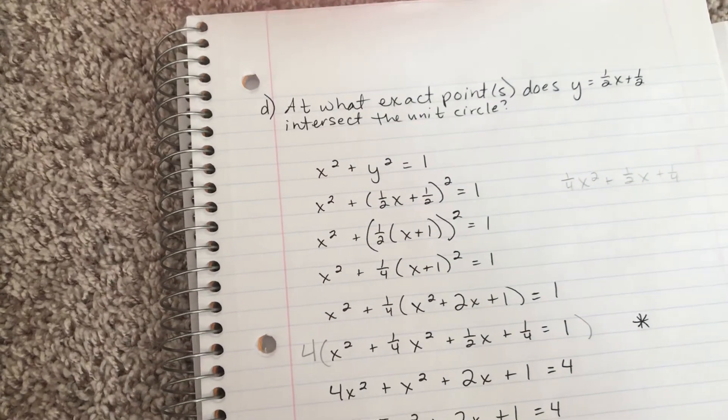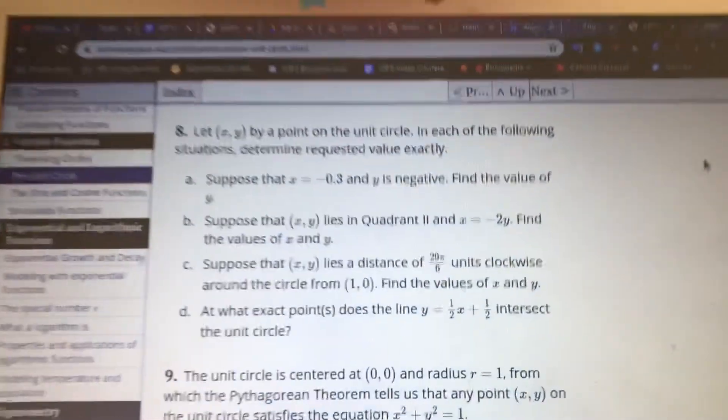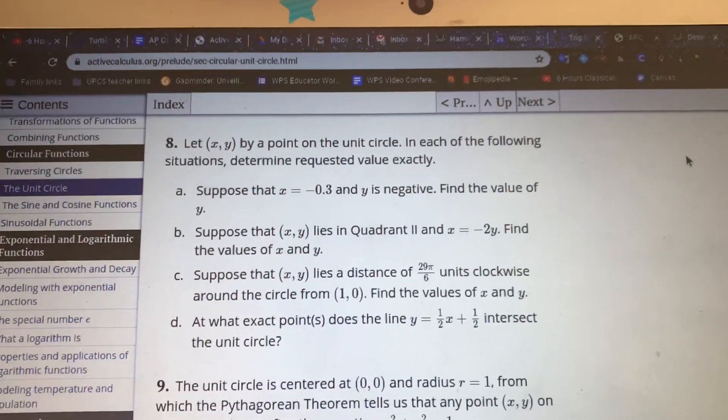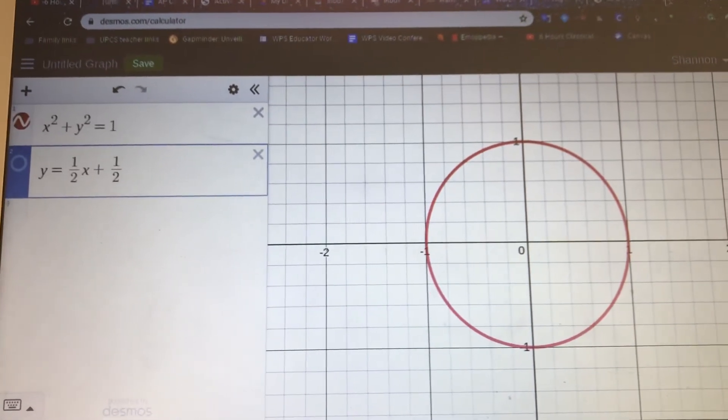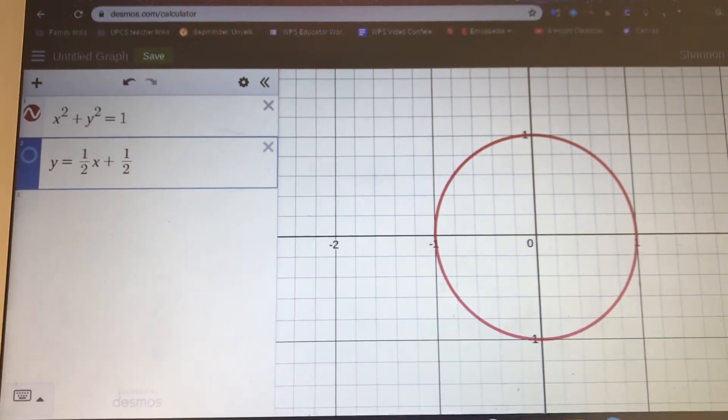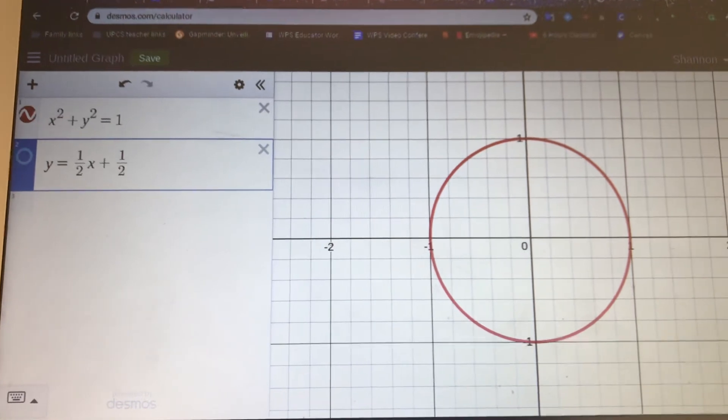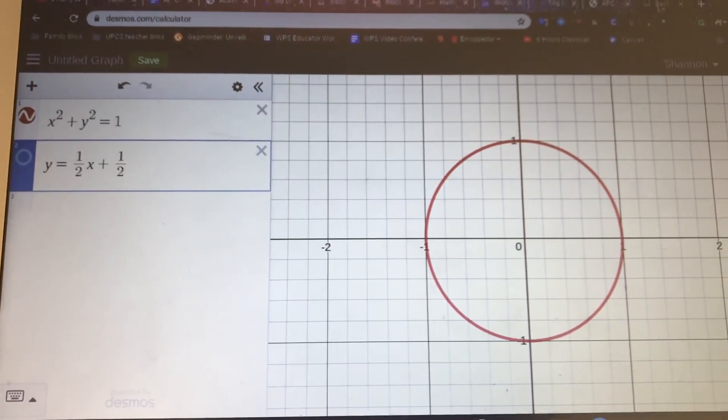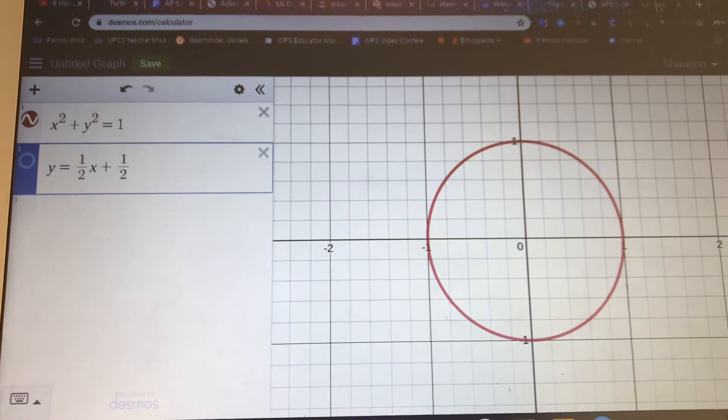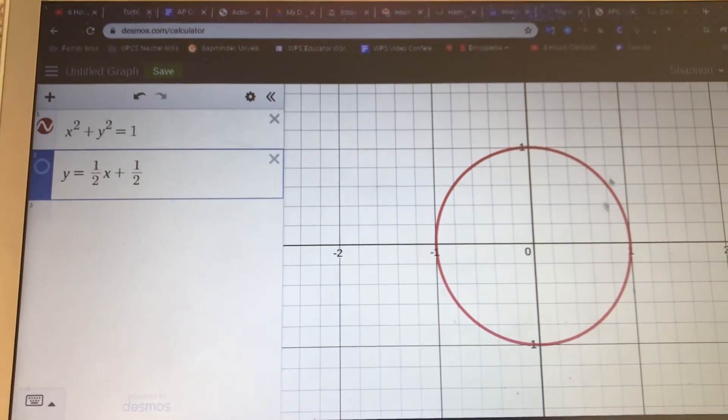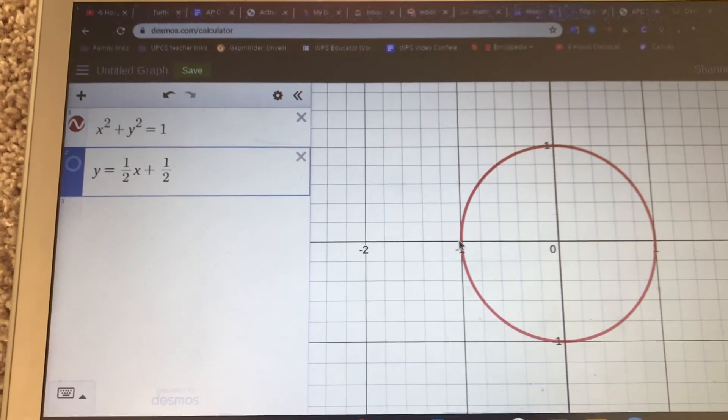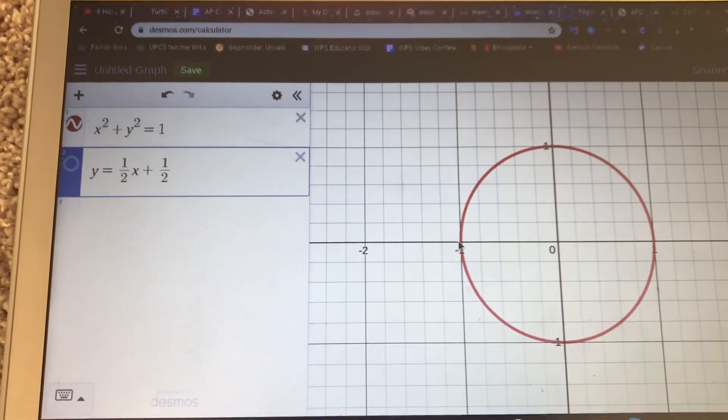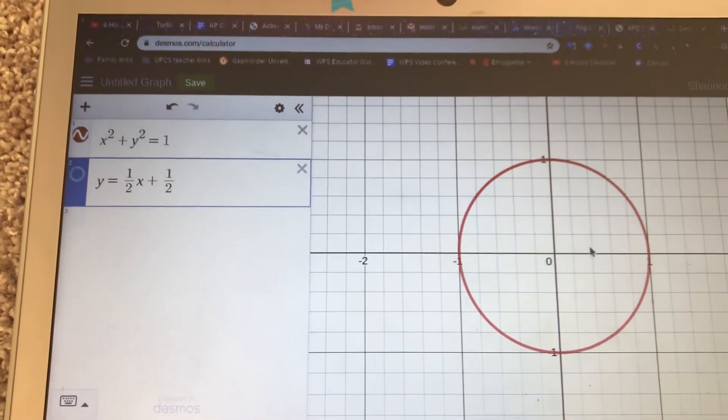And then if we come over here, I was playing around with Desmos to kind of see what this looks like. So I have my unit circle right, and we know that at the point x equals negative 1, we're going to have this touching. So where x equals negative 1 is going to be right there. And also where x is equal to 3/5, so that would be about, let's see, x is equal to 3/5, yeah, about there.